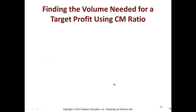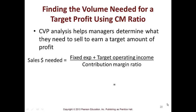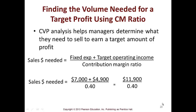CVP analysis helps managers determine what they need to sell to earn a target amount of profit. Most managers are most intimate with their sales of service or product, so this is the language that speaks volumes to them. Your sales needed is fixed expense plus target operating income divided by the contribution margin ratio — $7,000 plus $4,900 divided by 40% gives you $29,750.